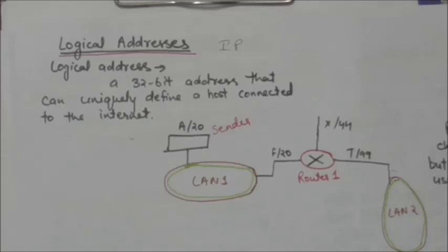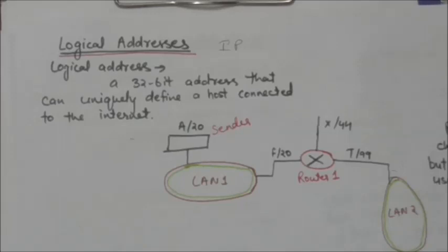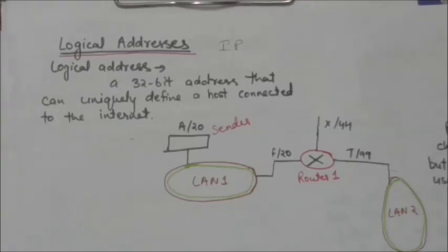Physical addresses are not adequate in an internetwork environment where different networks can have different formats. Therefore a universal addressing system is needed in which each host can be identified uniquely regardless of the underlying physical network. For that purpose, logical addresses are designed. How these logical addresses work will be clear after the following example.